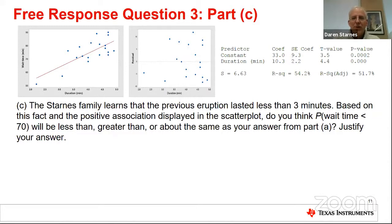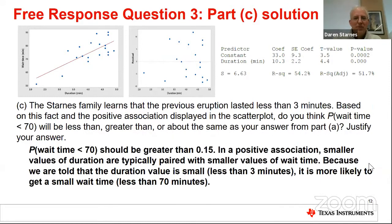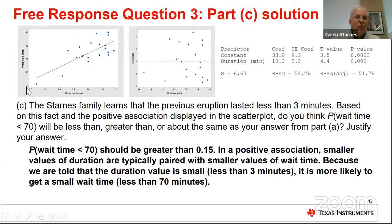Model solution for part C: the probability that the wait time is less than 70 should be greater than 0.15. In this positive association, smaller values of duration are typically paired with smaller values of wait time. Because the duration value is small — less than three minutes — it's more likely to get a small wait time. That's not good news for the Starnes family; they probably should have looked at this relationship before deciding to go to the bubbling mud pots.